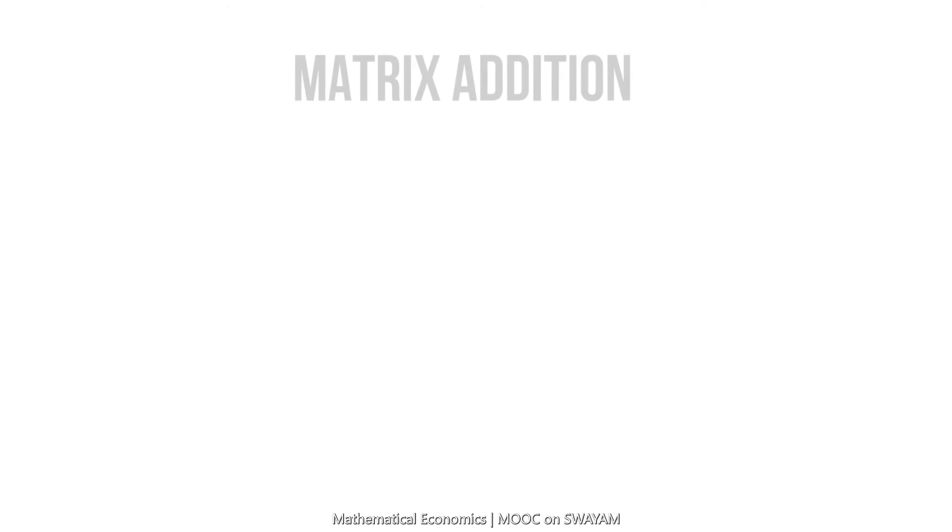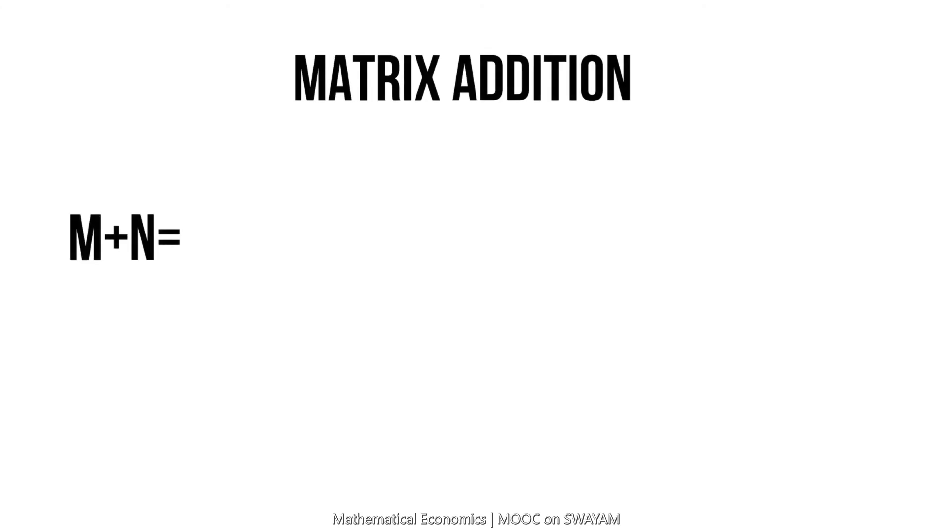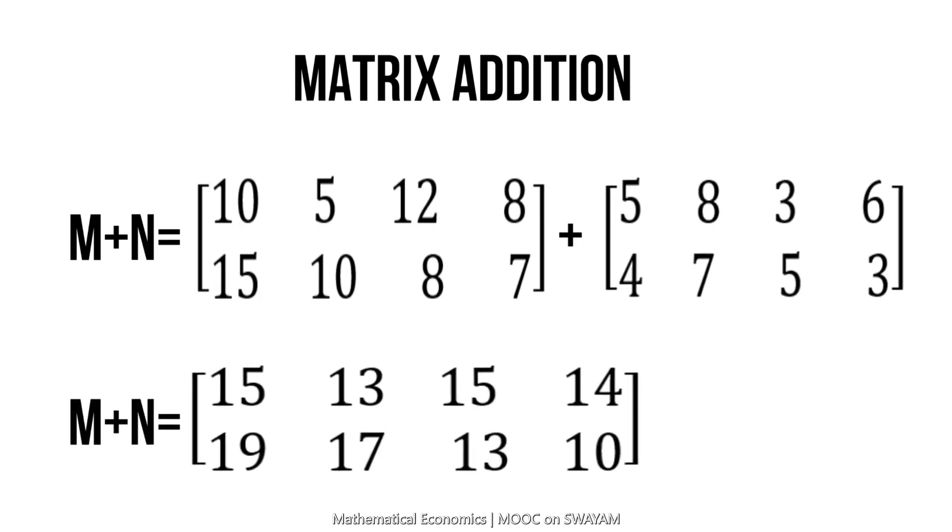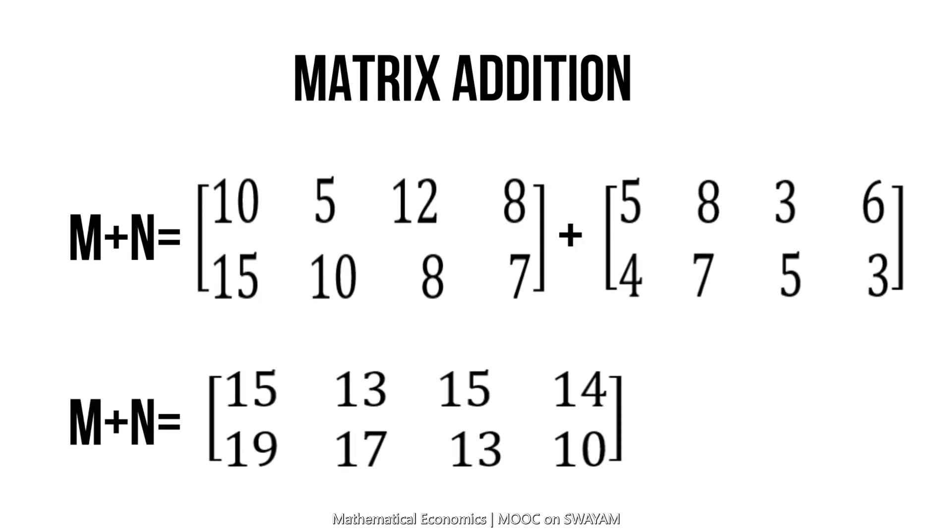Now, matrix addition gives the first matrix plus the second matrix that is equal to the resultant matrix M plus N. This is the table that the manufacturer constructed to find the total weekly sales of product X and Y.